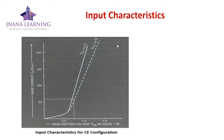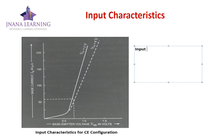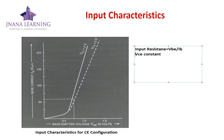Similar to the common base configuration, from the input characteristics we can find the dynamic input resistance. The input resistance is equal to the ratio of the change in base-emitter voltage to the change in base current — that is, delta VBE divided by delta IB — keeping VCE constant. That concludes the input characteristics for common emitter configuration.